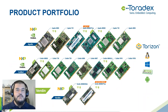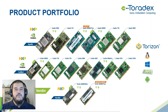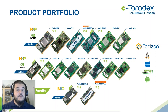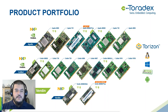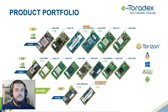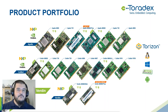We have quite a wide set of modules, three different families, compatible within the same family. We have Apalis and Colibri, our historical products that have been around for quite some time. And we have our new family Verdin, which was announced this year at Embedded World in Nuremberg in February. This does not mean we are no longer developing products with the other two families — each one can fit slightly different scenarios.